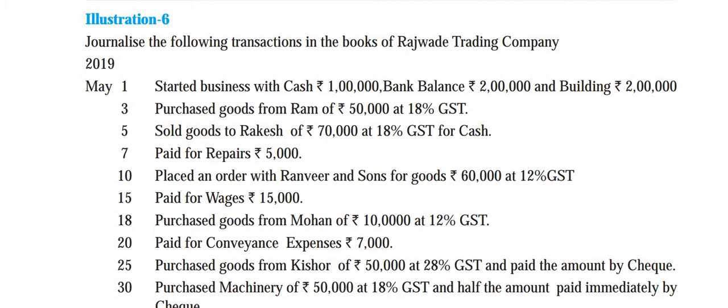The question is: journalize the following transactions in the books of Rajwadi Trading Company. The first transaction is: started business with cash Rs. 1 lakh, bank balance Rs. 2 lakhs, and building Rs. 2 lakhs. This is a simple combined entry. The journal entry will be: cash account debit, bank account debit, building account debit, to capital account credit.